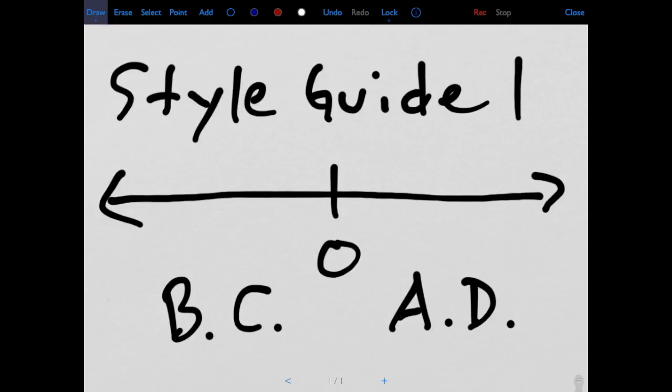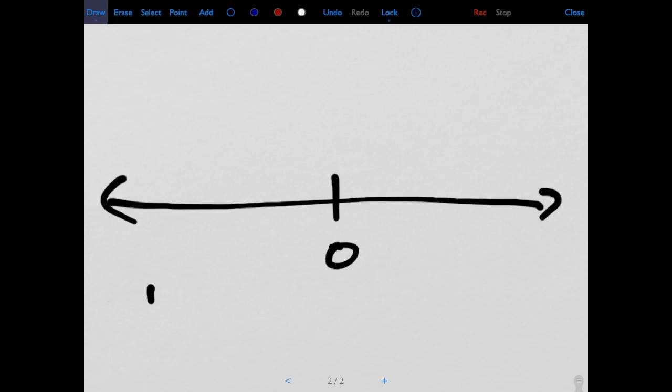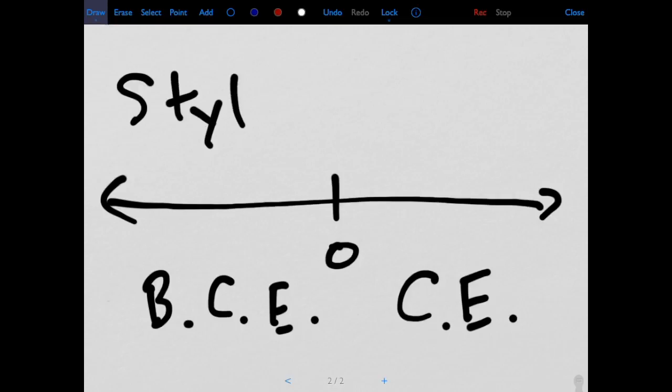I'm going to push the plus button at the bottom because I want to use two different slides for this. So I'm going to create the same thing, but this time I'm going to put BCE. And I'm putting these things here, and then CE, because I want to use a different font to explain these things as we go. So I've got my two slides ready.